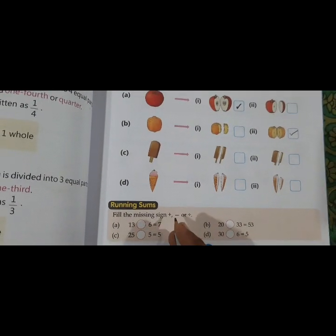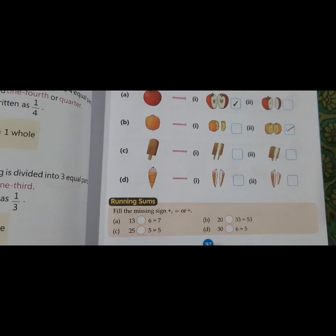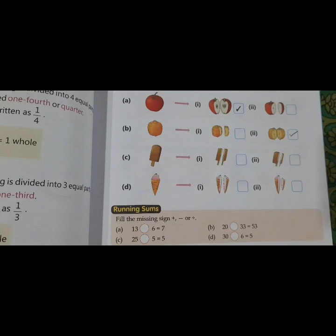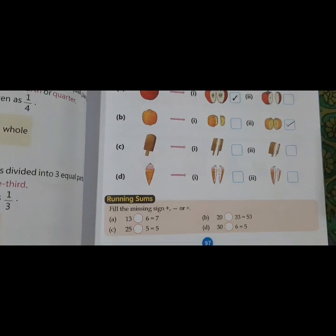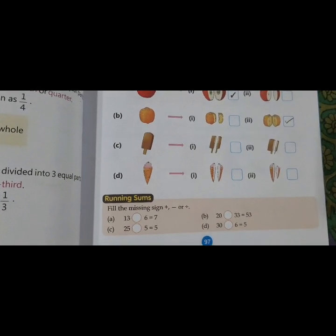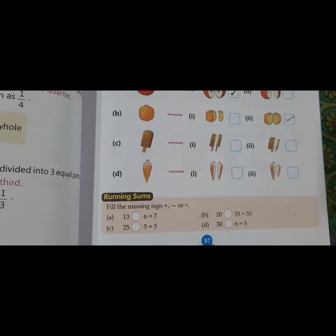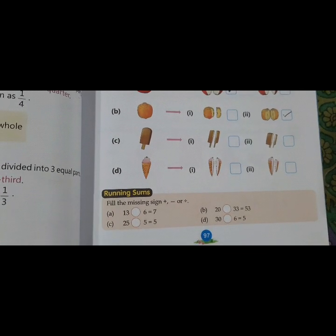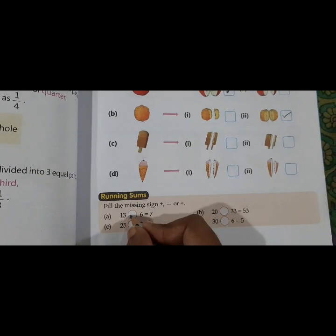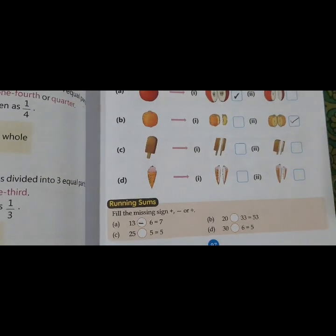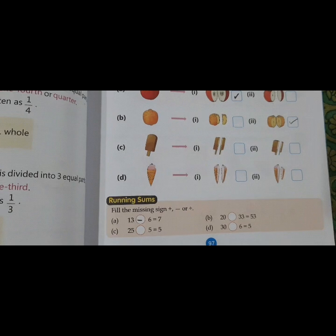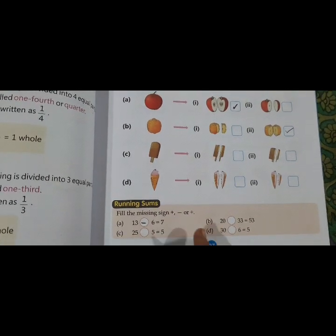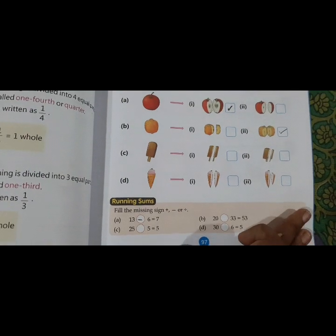Running sum. Fill the missing sign, plus, minus, or division. Now, 13, 6 and 7. So what will become, if 13 plus 6, basically, in addition, the number will be more. So we have to use whether subtraction or division sign. But we have to use the subtraction sign. 13 minus 6 equals 7. Yes. Likewise, you have to solve B, C, and D. Turn the page.